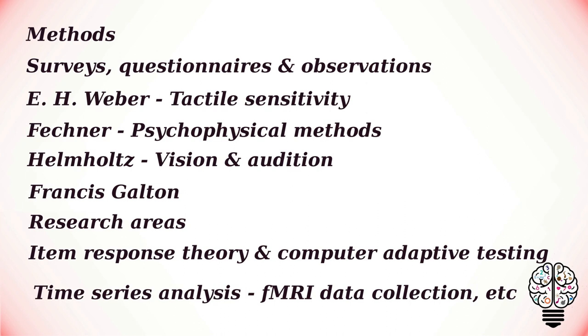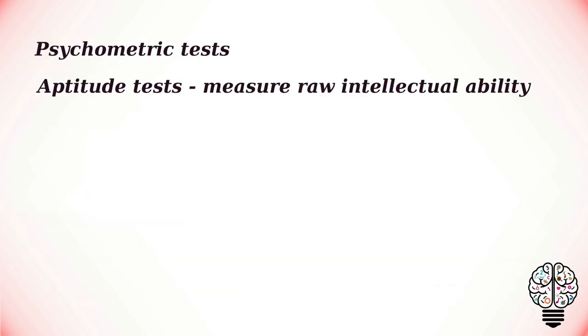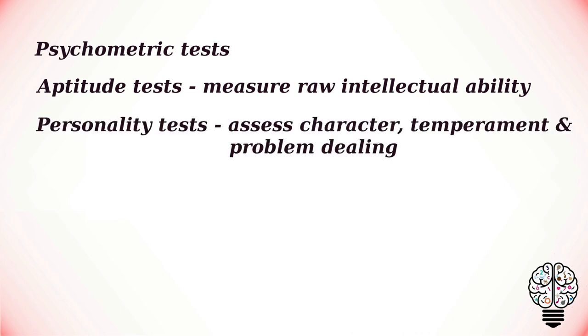Human decision science and statistical genetics. Two common types of psychometric tests are aptitude tests which are supposed to measure raw intellectual ability, and personality tests that aim to assess your character, temperament and how you deal with problems.